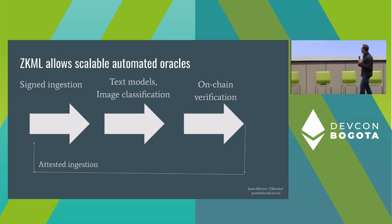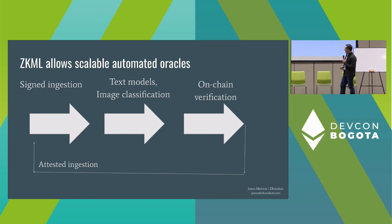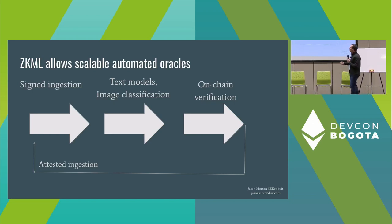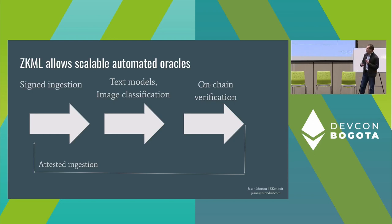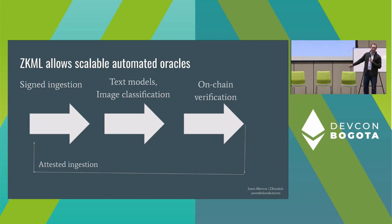Going back to applications — I like to think about this as allowing scalable automated oracles. There are three stages to that. The first stage is ingesting some kind of signed data. It works fine with unsigned data, but there's an adversarial problem, so we need to rate-limit incoming data or make sure it's been signed off on by a news organization, a camera, or something like that. Then we run a model — maybe a text model, maybe image classification — and it makes a decision about what the data was. Finally, there's on-chain verification that feeds back into the attestation loop and can be used in the next model.